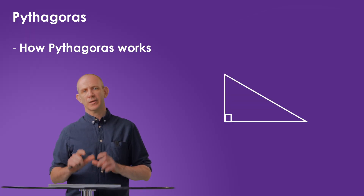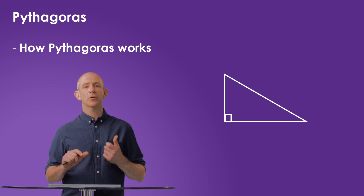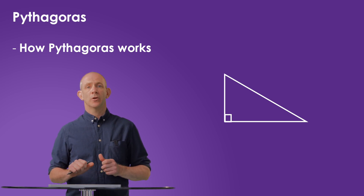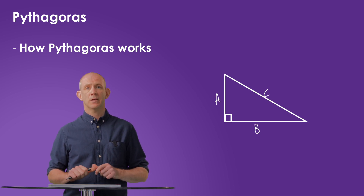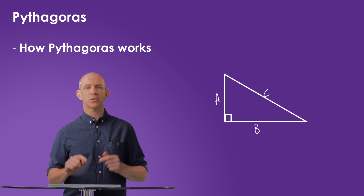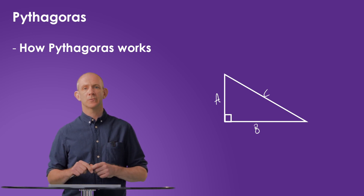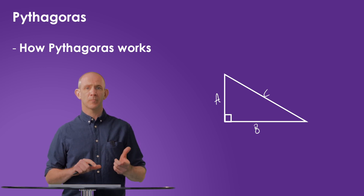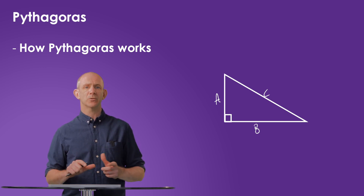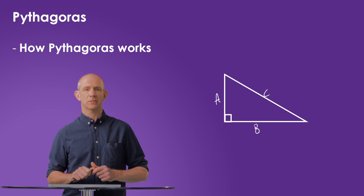Let's look at how Pythagoras Theorem works. Here we've got a right angle triangle whose sides we're going to label A, B and C. The letter C must be placed on the longest side, which is called the hypotenuse. It doesn't really matter which side you place A or B on, but popular convention means that you place A on the smaller of the two remaining sides.